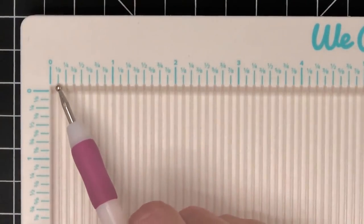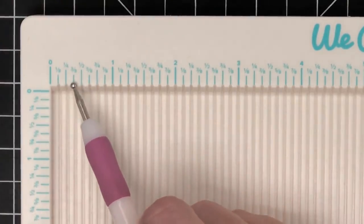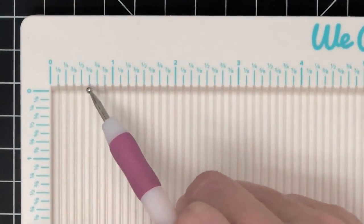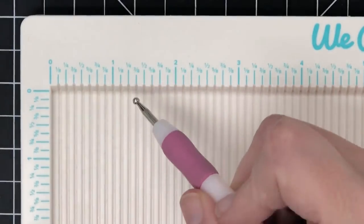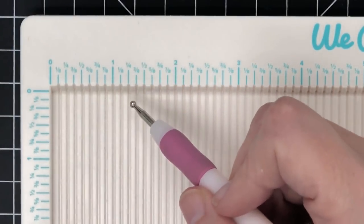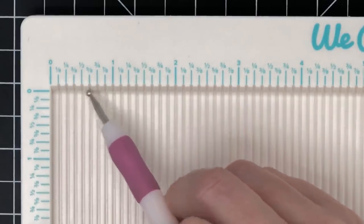So it's zero, one eighth, one quarter, three eighths, one half, five eighths, three fourths, and seven eighths. So if you struggle with measuring, especially when it comes to your scoreboard, this one has it marked out for you.